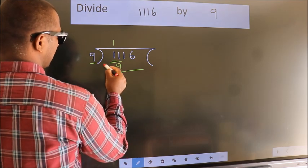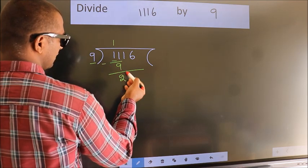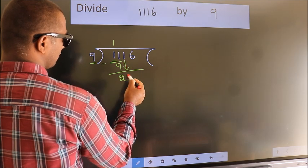Now we should subtract. We get 2. After this, bring down the beside number. So 1 down.